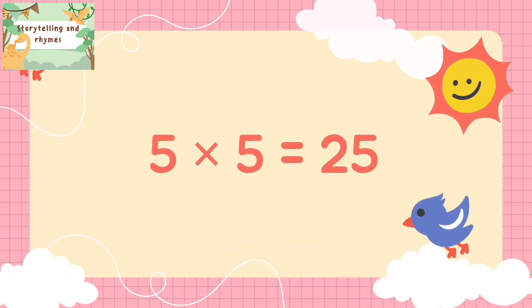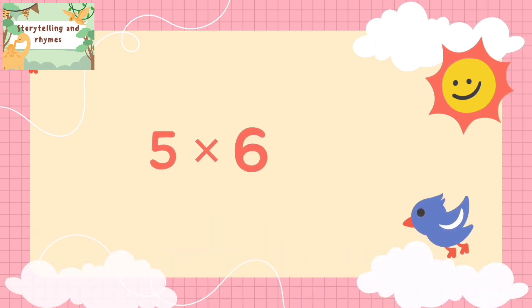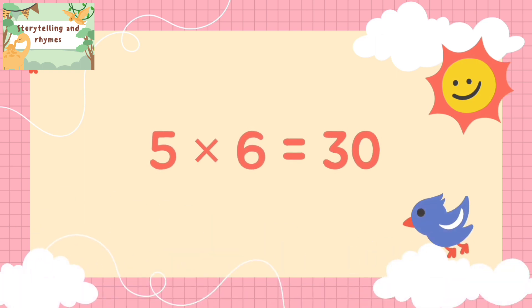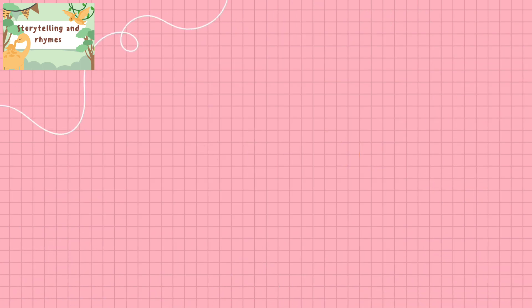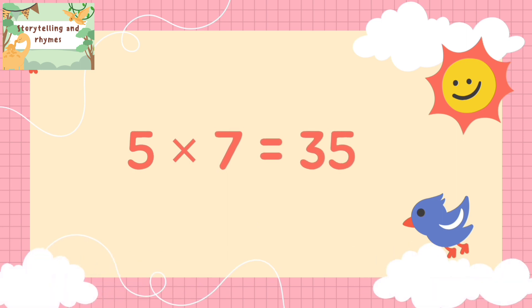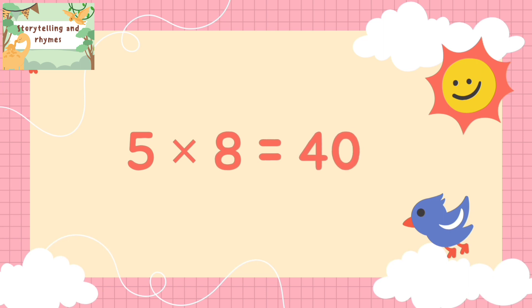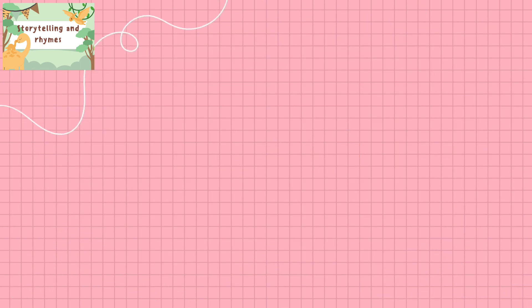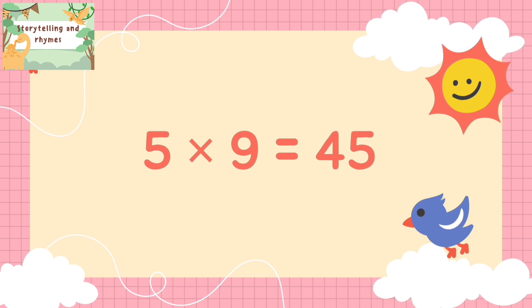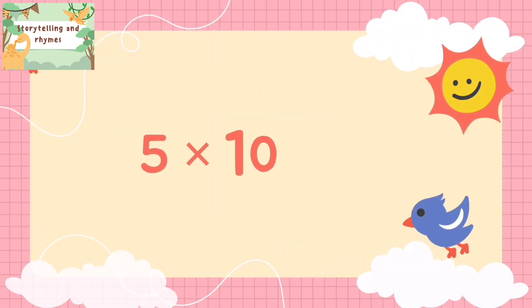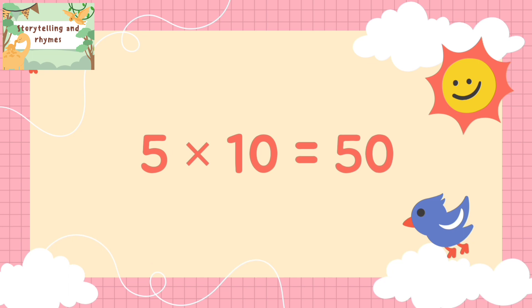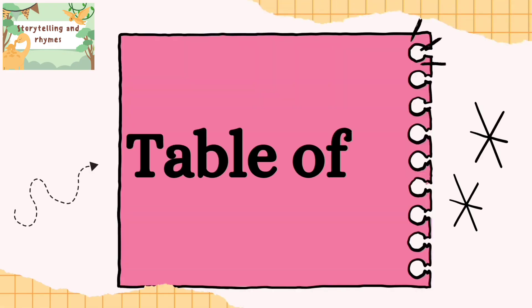Five sixes are 30, five sevens are 35, five eights are 40, five nines are 45, five tens are 50.